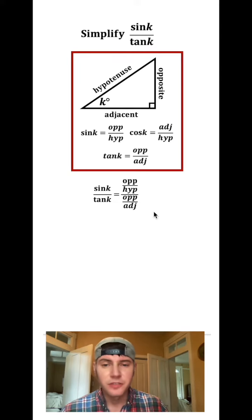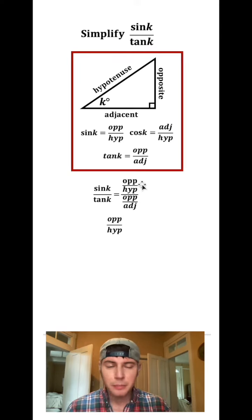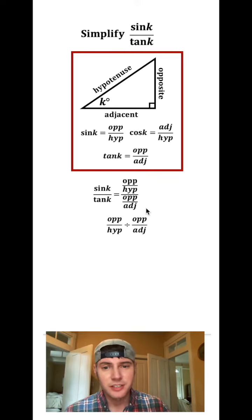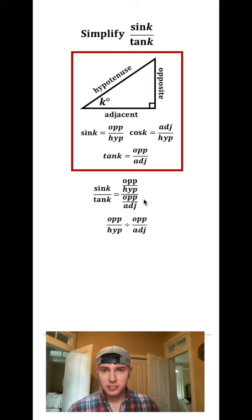So we can think of this ratio as a division problem. We can take this opposite over hypotenuse that's on top, and then we're going to divide it by this opposite over adjacent. That's another way you can think of fractions as just division, the top divided by the bottom.